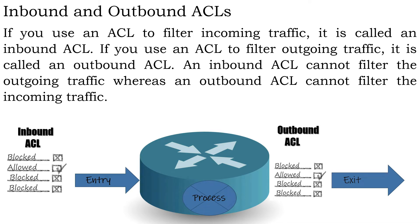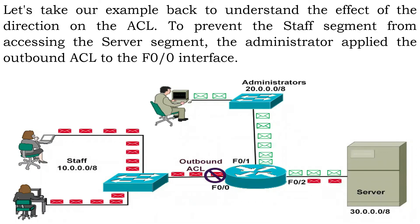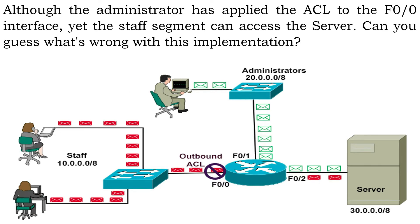An inbound ACL cannot filter the outgoing traffic, whereas an outbound ACL cannot filter the incoming traffic. Let's take our example back to understand the effect of direction on the ACL. To prevent the staff segment from accessing the server segment, the administrator applied the outbound ACL to the F0/0 interface. Although the administrator has applied the ACL to the F0/0 interface, the staff segment can still access the server. Can you guess what's wrong with this implementation?